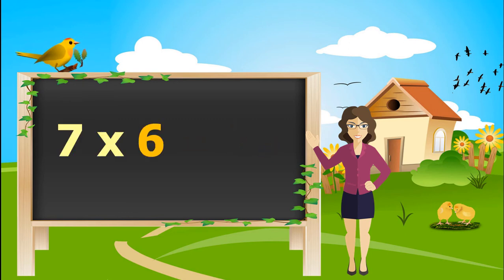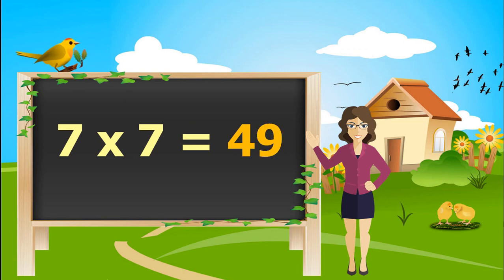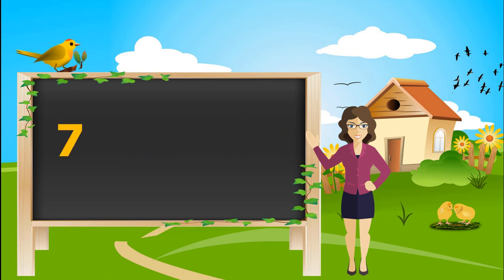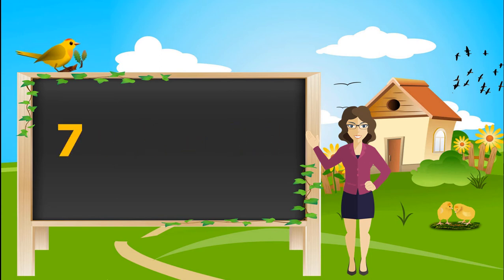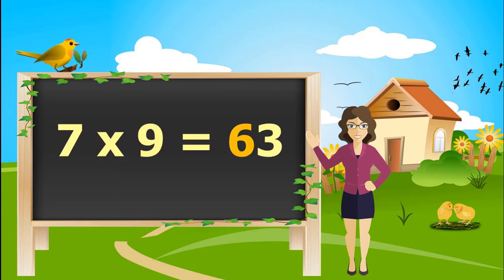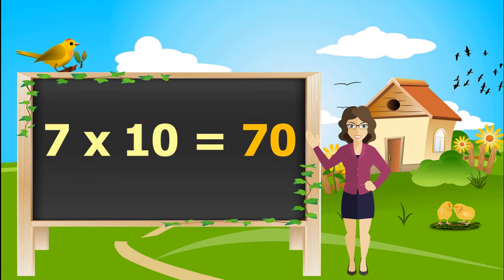7 sixes are 42. 7 sevens are 49. 7 eights are 56. 7 nines are 63. 7 tens are 70.